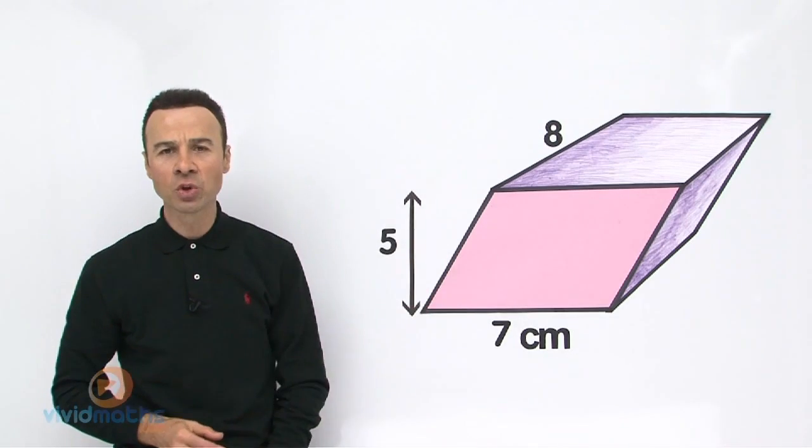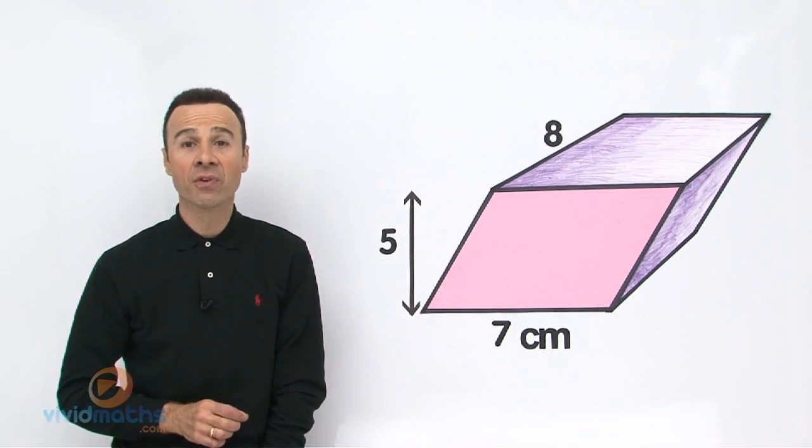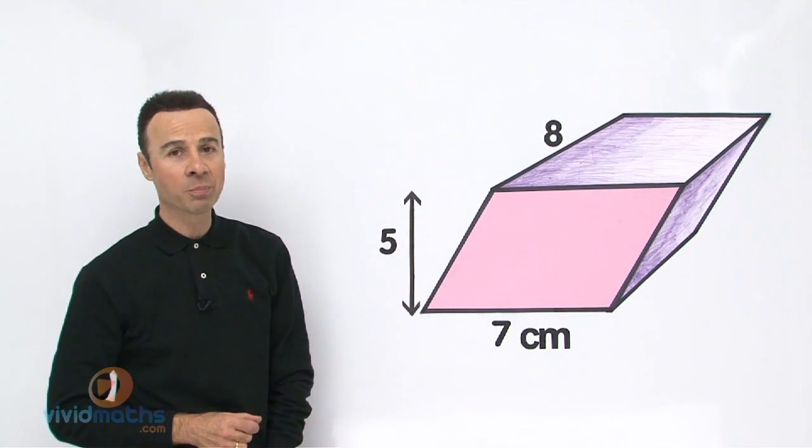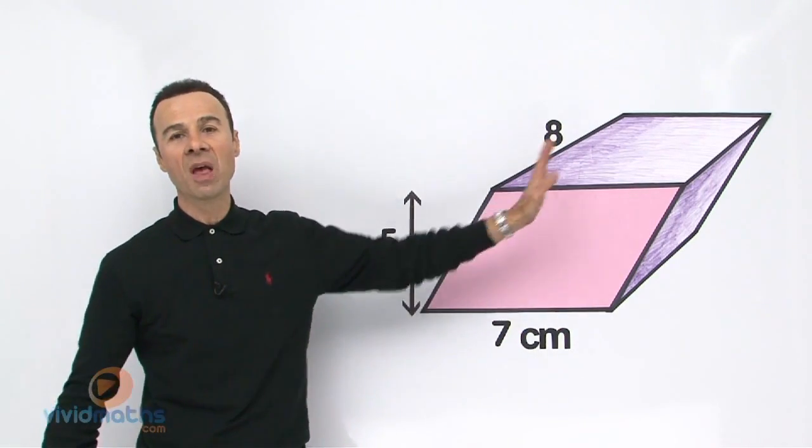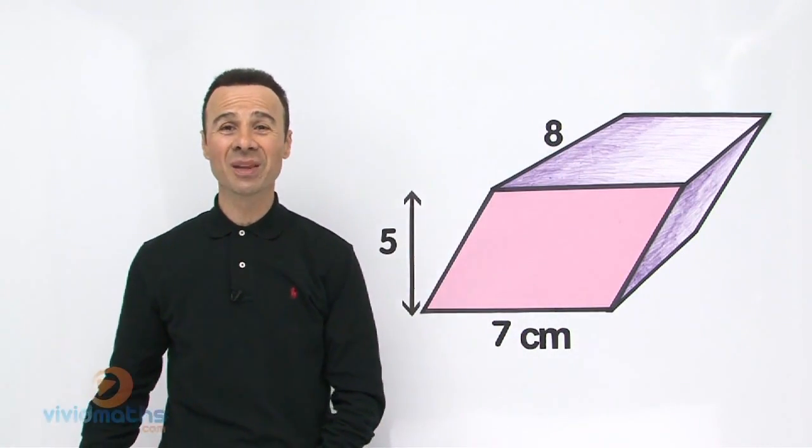Now this is a rather unusual one. You won't see one of these shapes very often. Yes, it is a prism and it is a parallelogram in the front, so it is called a parallel prism. Very rare, but you do see them.